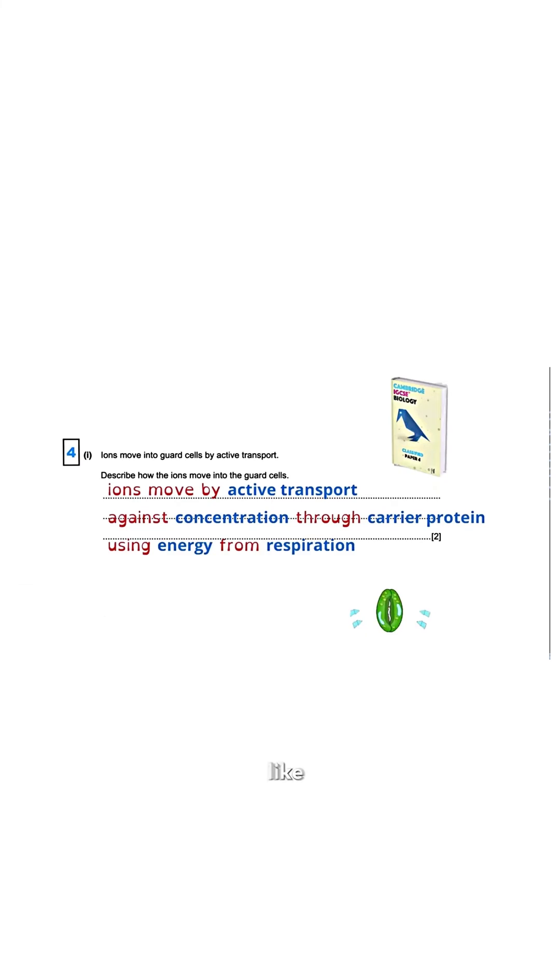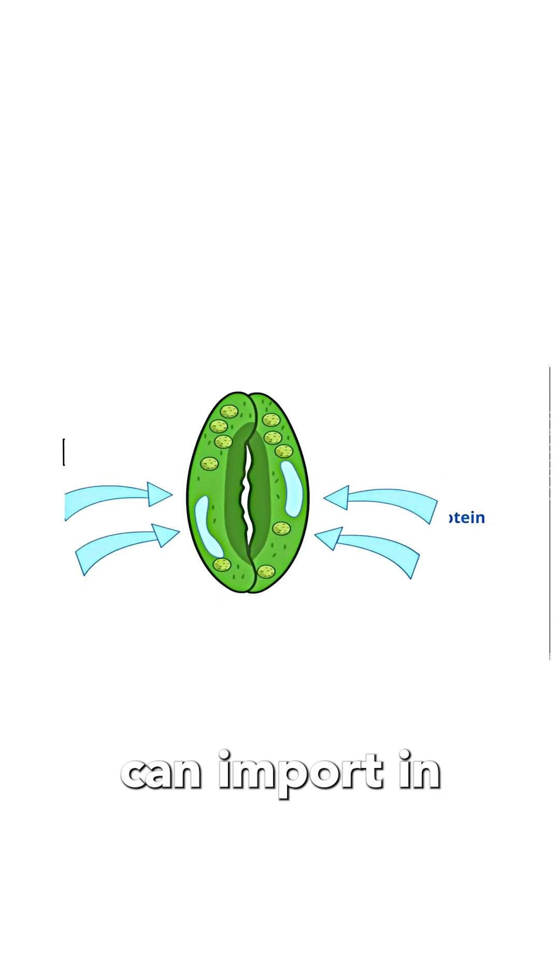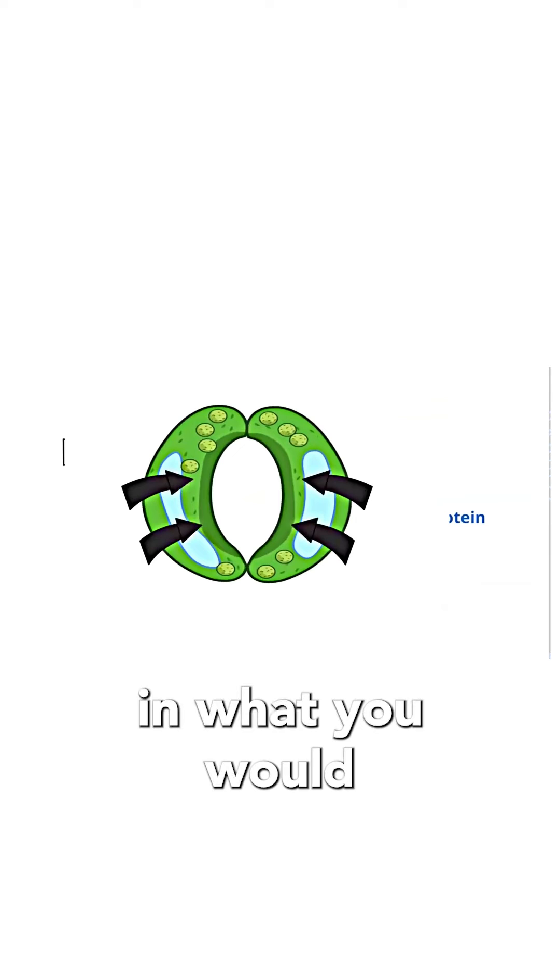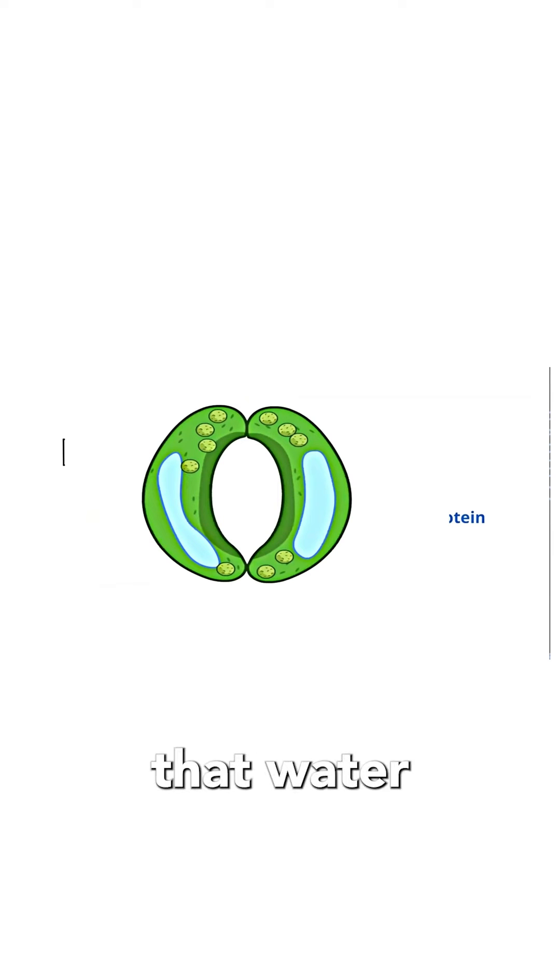This question is showing me they asked that guard cells can import ions. As they move ions in, what would you expect to happen? You'd expect the water potential inside these guard cells to drop.